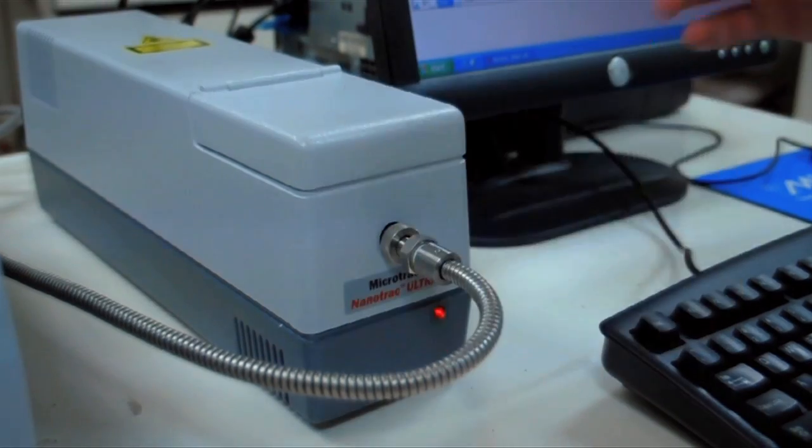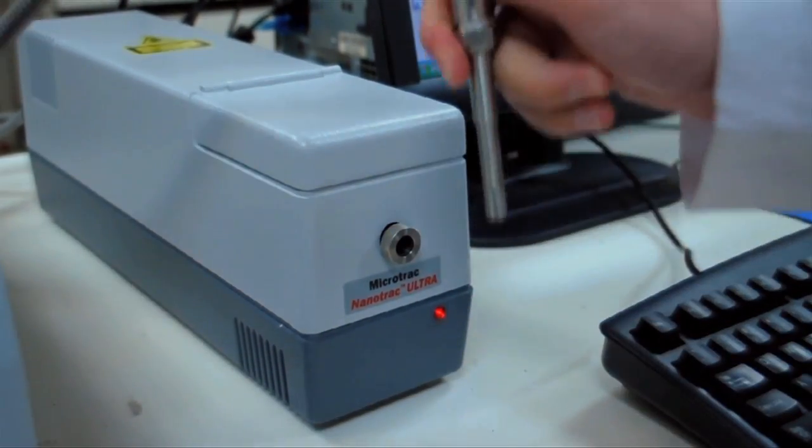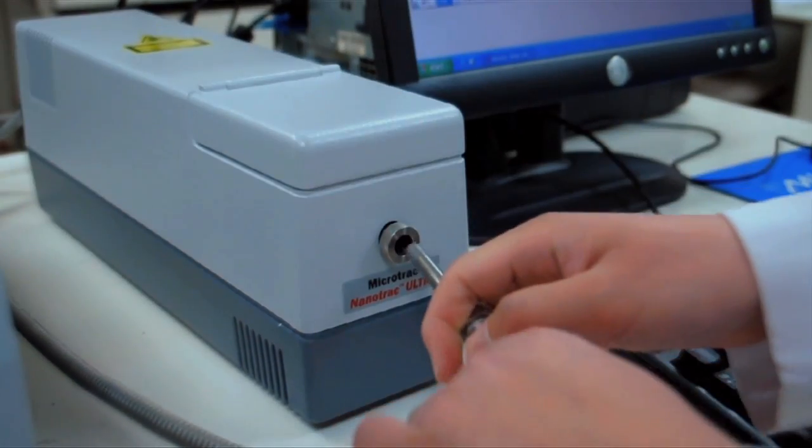A unique feature of the Nanotrack is that it does not require consumables such as cuvettes. It has a handheld probe which can be used to analyze the samples, similar to how you would use a pH probe.